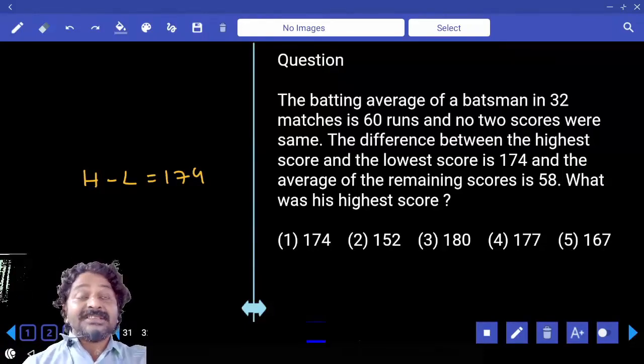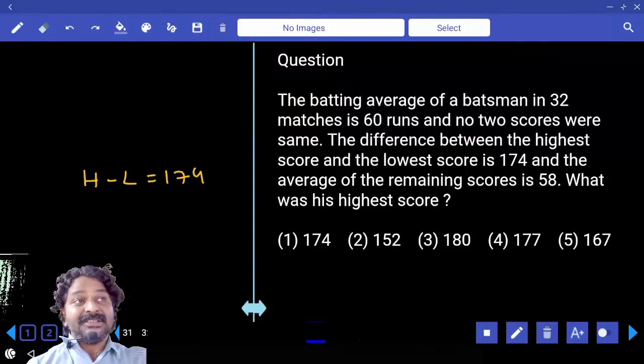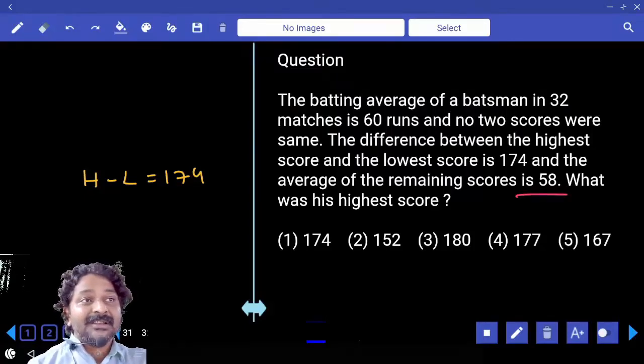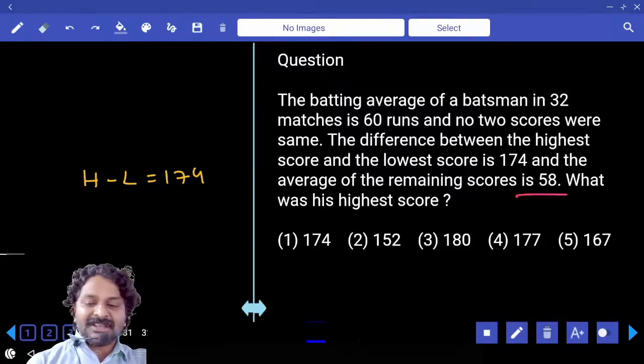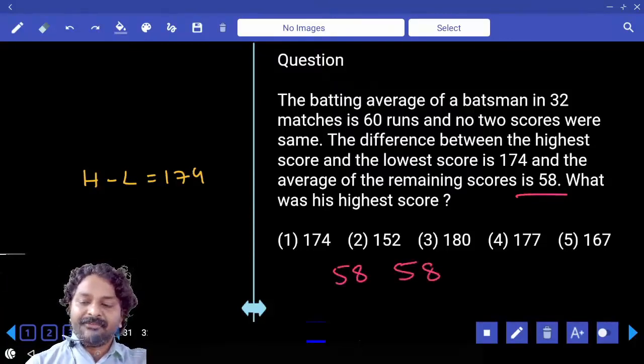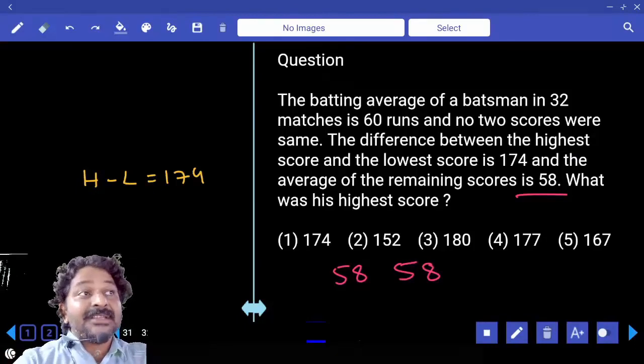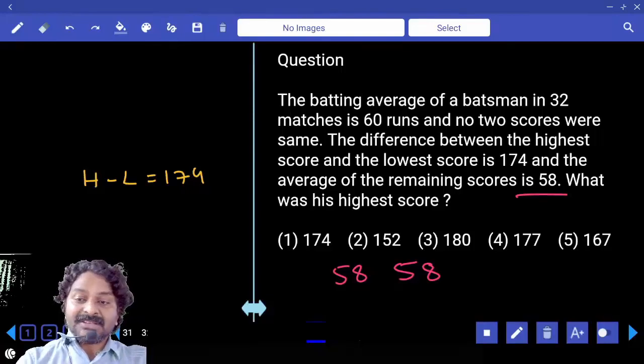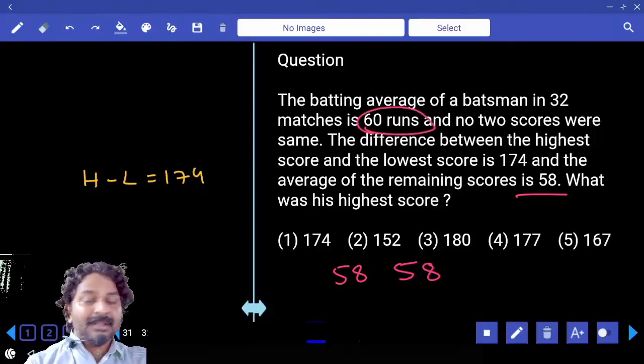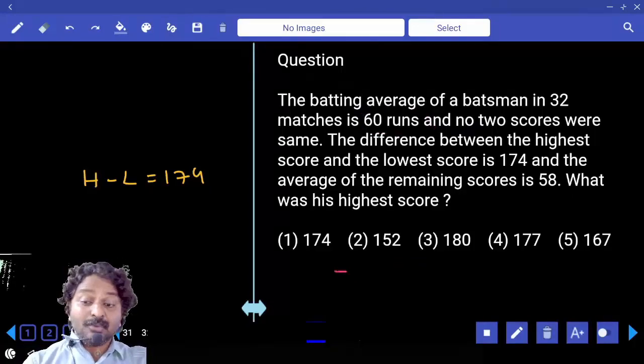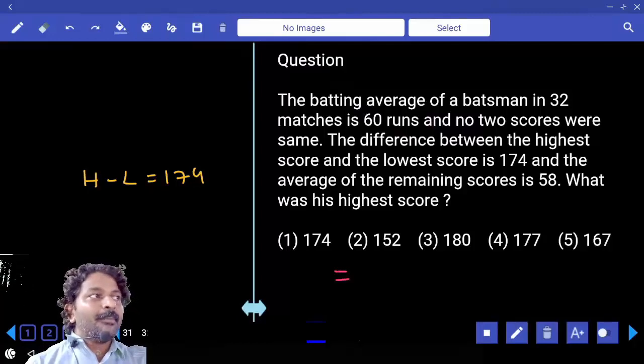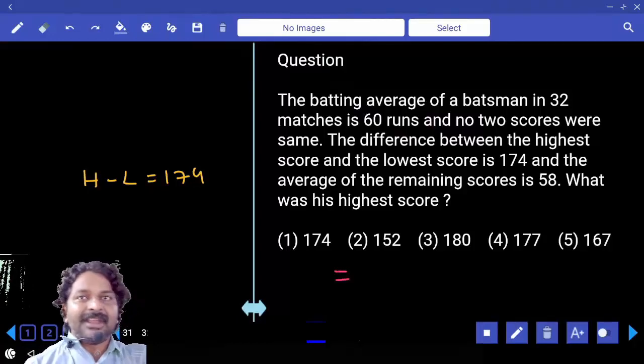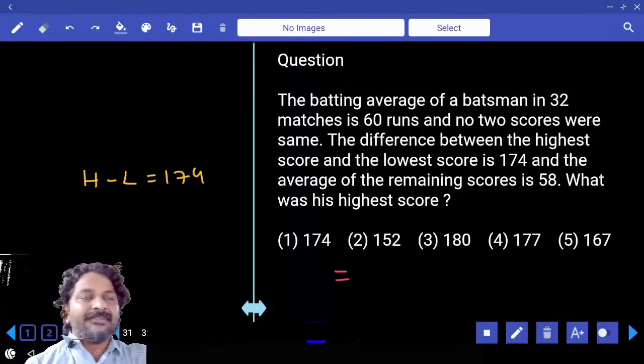30 matches, and what is the average for those 30 matches? 58. In those two matches also, if he scores 58 and 58, what will happen to the average? Average will be same, but including those two matches what is the average? That means in those two matches he scored more than 58 and 58, correct? First tell me what is 58 plus 58?